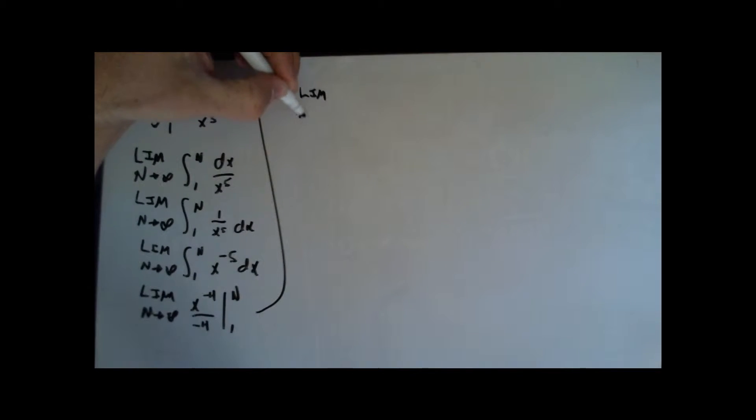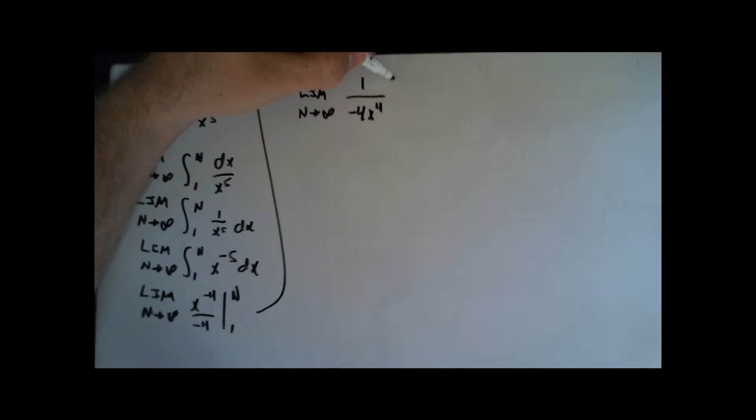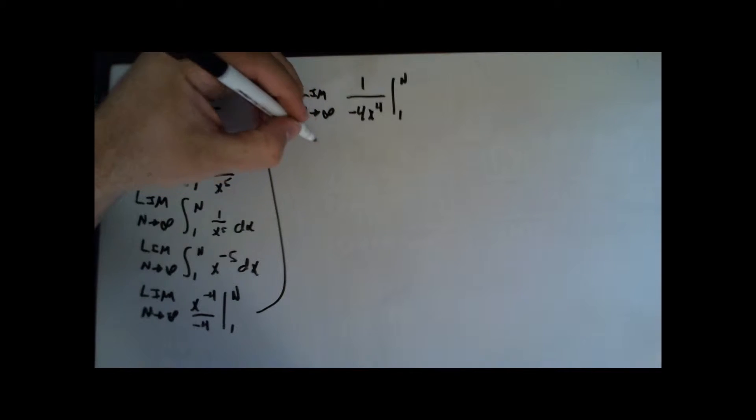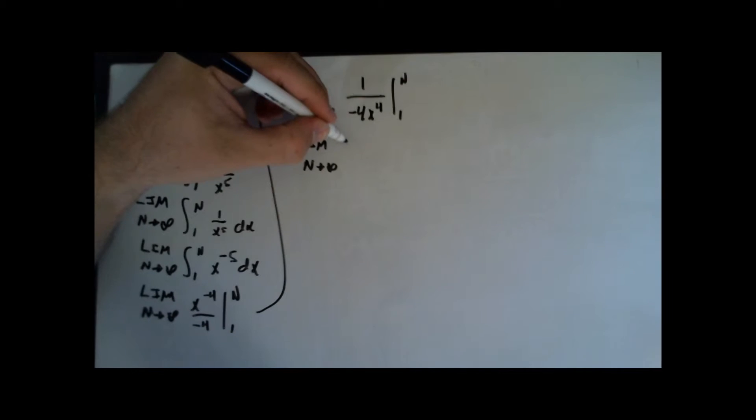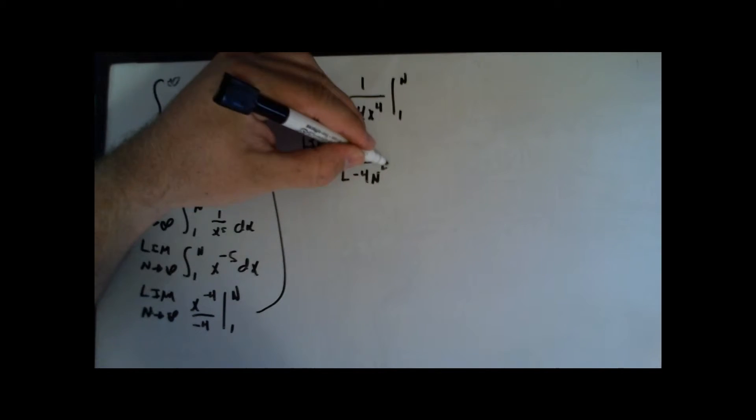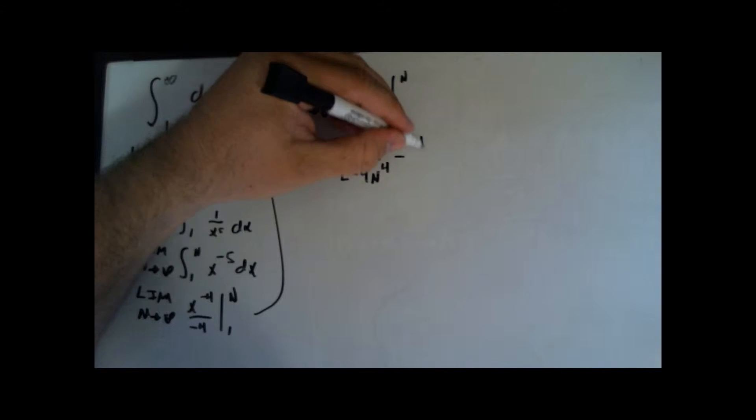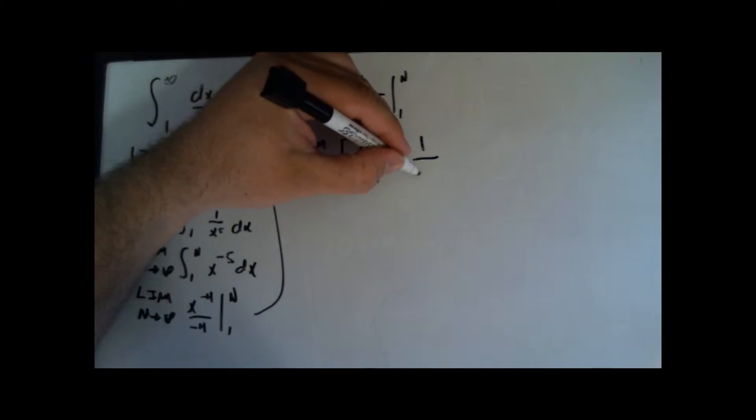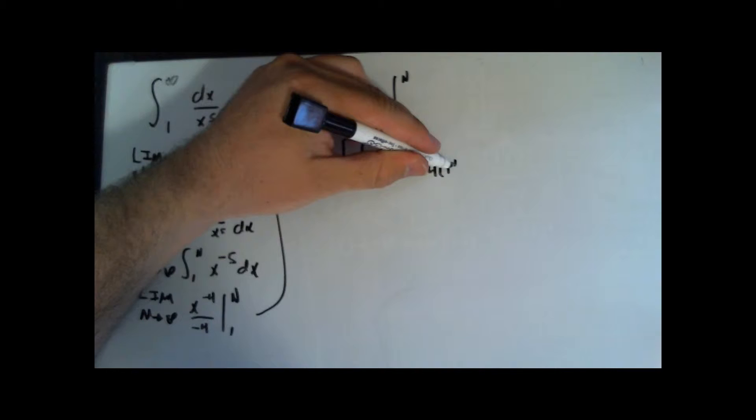The limit as n approaches infinity. And to simplify this, 1 over negative 4 times x to the 4th, 1 to n. Then I can go ahead and plug in my limits of integration and say the limit as n approaches infinity. Put a bracket there. Brackets are pretty cool. 1 over negative 4n to the 4th minus 1 over negative 4 times 1 to the 4th.